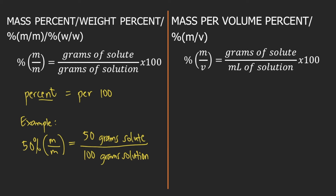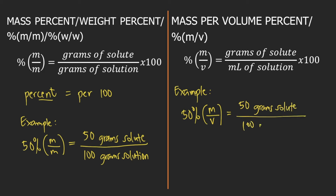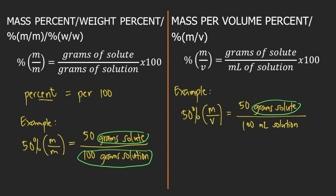Now let's move on to mass per volume percent, or the symbol percent m over v. Percent mass over volume is equal to grams of solute divided by mL of solution times 100. This is also in percent, so it is also per 100. For example, 50 percent mass over volume means 50 grams of solute per 100 mL of solution. So mass percent is grams of solute per 100 grams of solution, and percent mass per volume is grams of solute per 100 mL of solution.